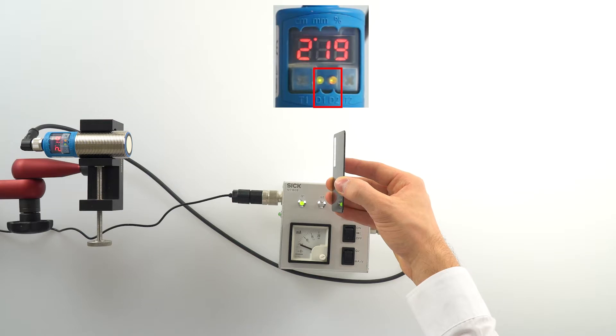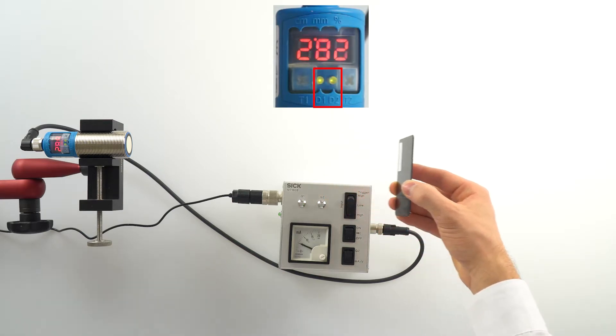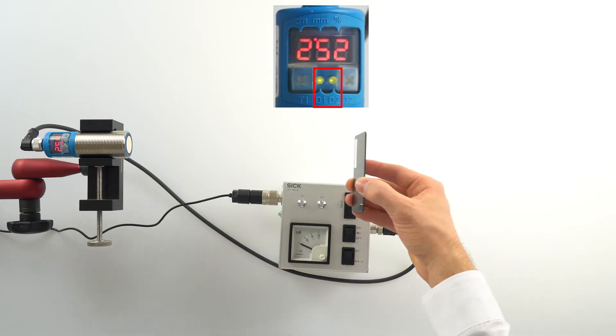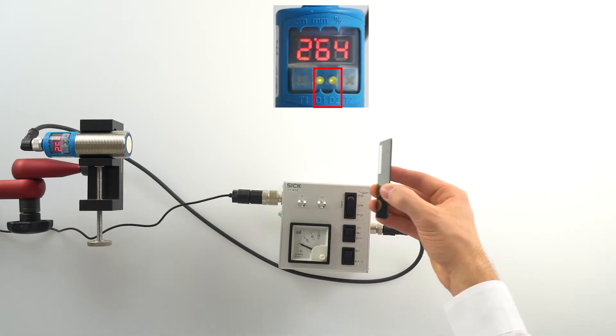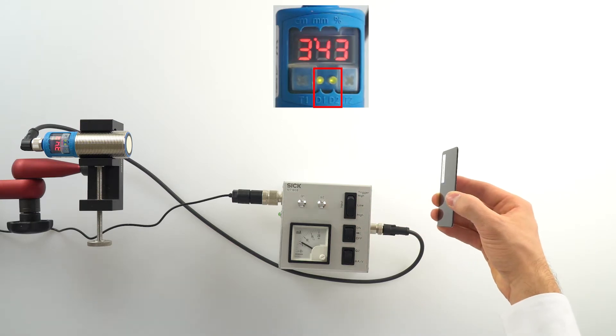The parameterization of the switching point is not only possible via teach-in, it can also be parameterized manually. Before we show you how to do the parameterization manually, please reset the UM30-2.